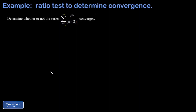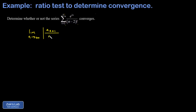The ratio test is very good at dealing with exponentials and factorials, and that's what I see, so I'm confident I can get this done. What we're doing with the ratio test is taking the large n limit of the absolute value of the next term — the n plus 1 term — divided by the previous nth term.